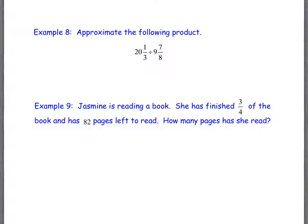We're going to do a couple of approximation questions. Example 8 says: approximate 20 and 1/3 divided by 9 and 7/8. If you're just approximating, what would be more helpful is whole numbers. What nice whole numbers might we want to use? 20 and 10 would be great — so roughly 20 divided by 10, which gives 2. So whatever you're doing when you actually work the problem out, if your answer is not close to 2, you've got an error. Your answer should be close to 2.